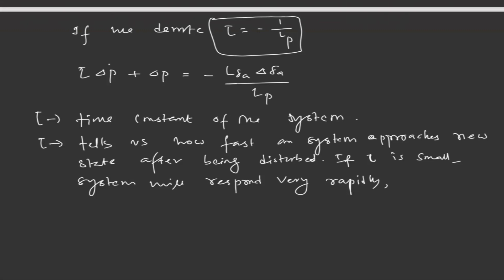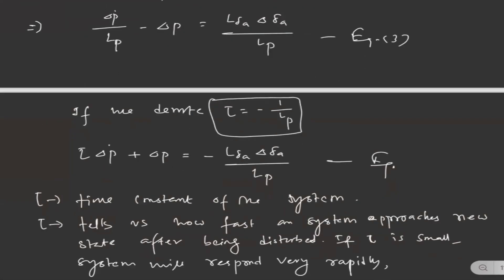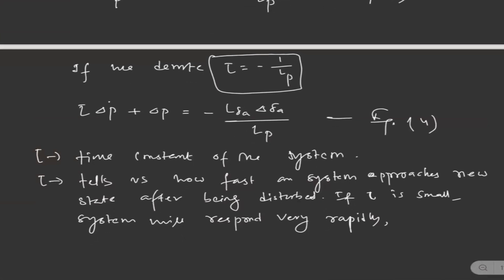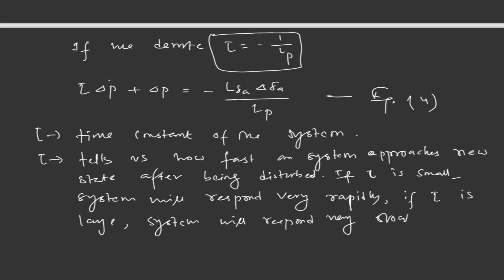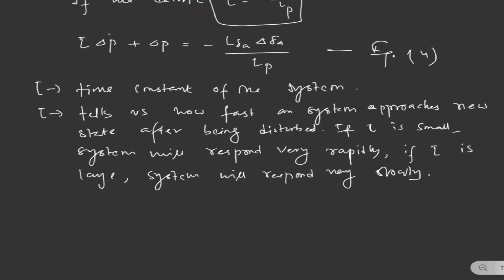If tau is small, the system will respond very rapidly, because the root is defined by equation number 4 in terms of tau, as we will see very soon. And if tau is large, the system will respond very slowly.